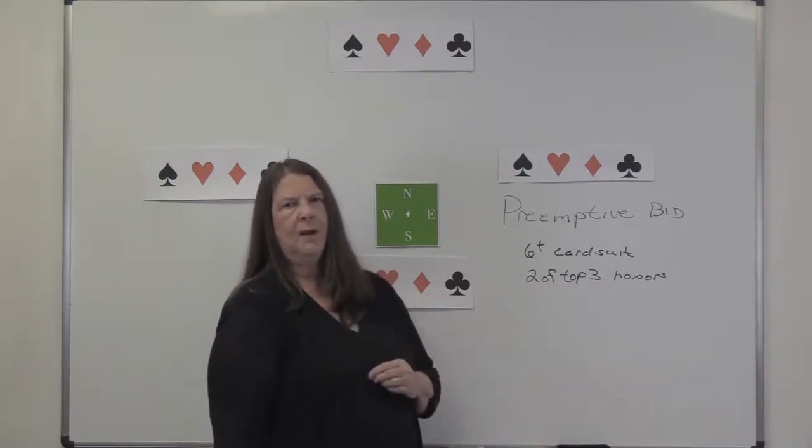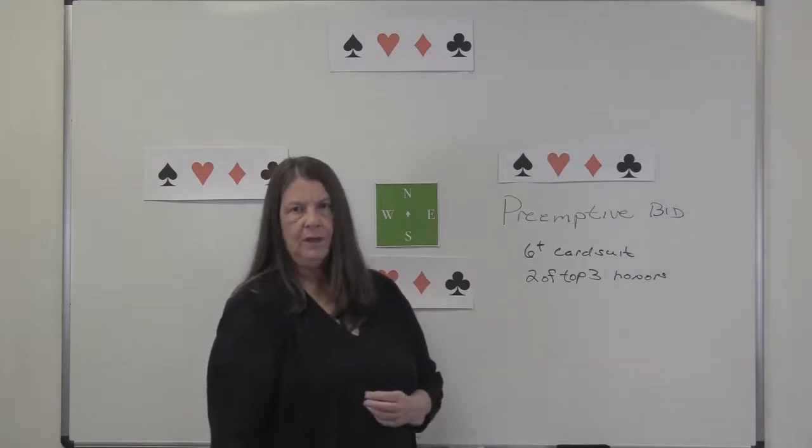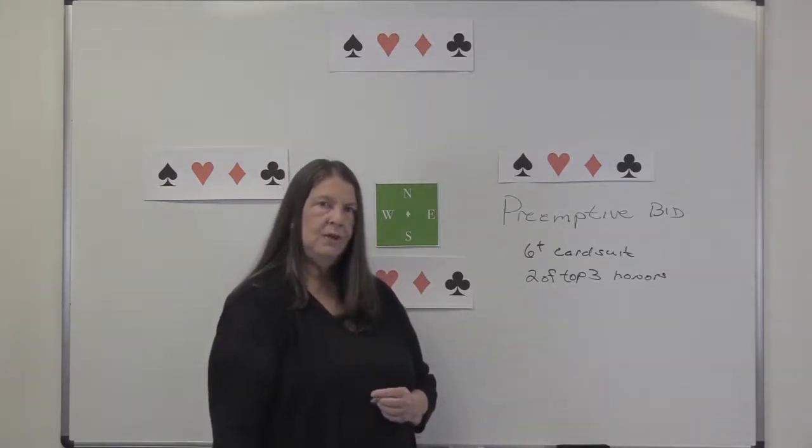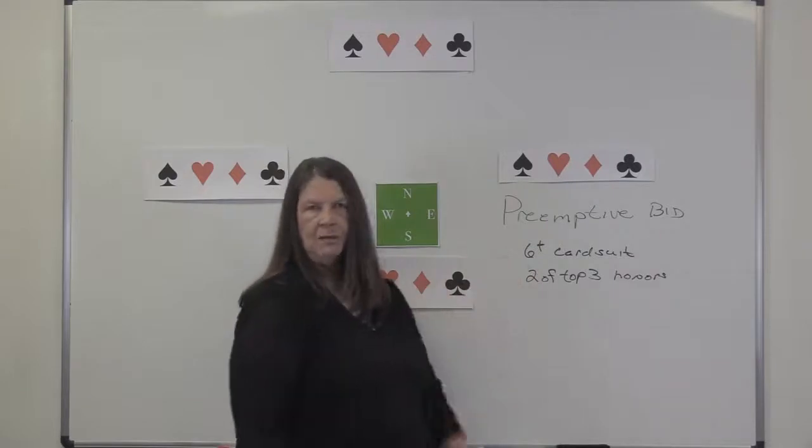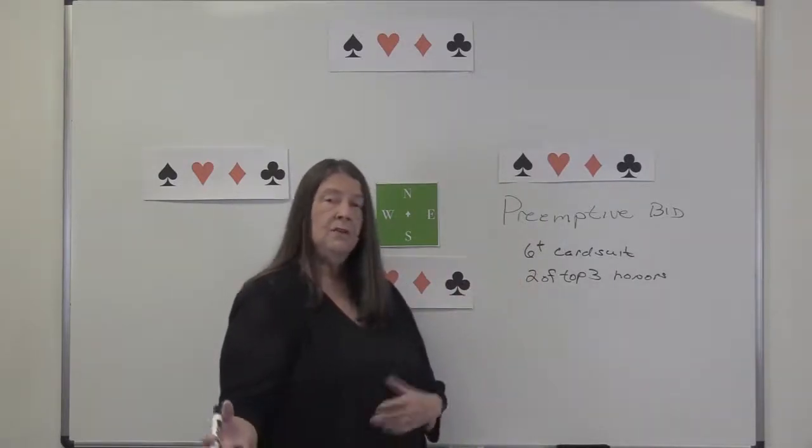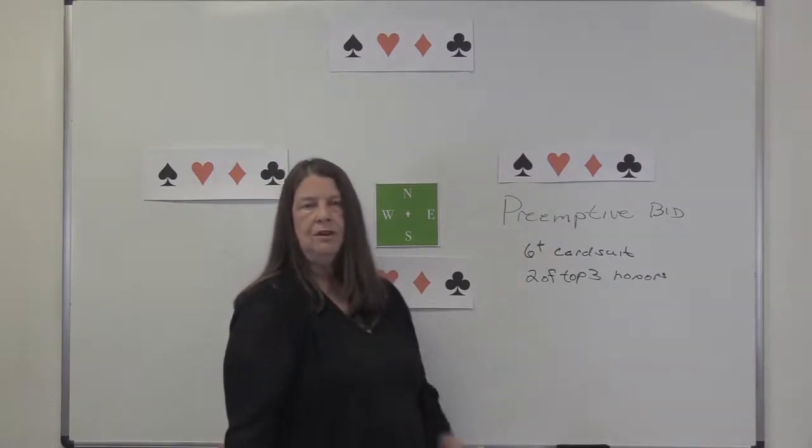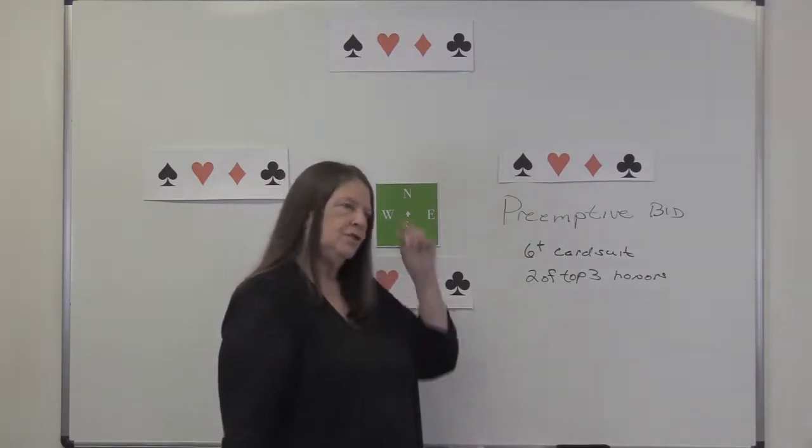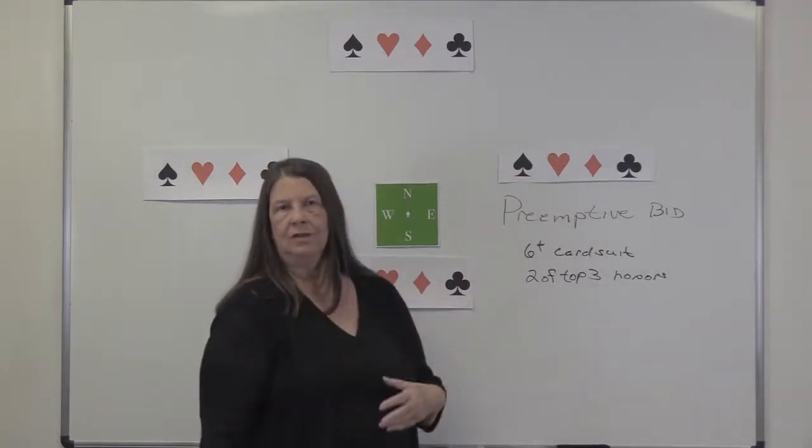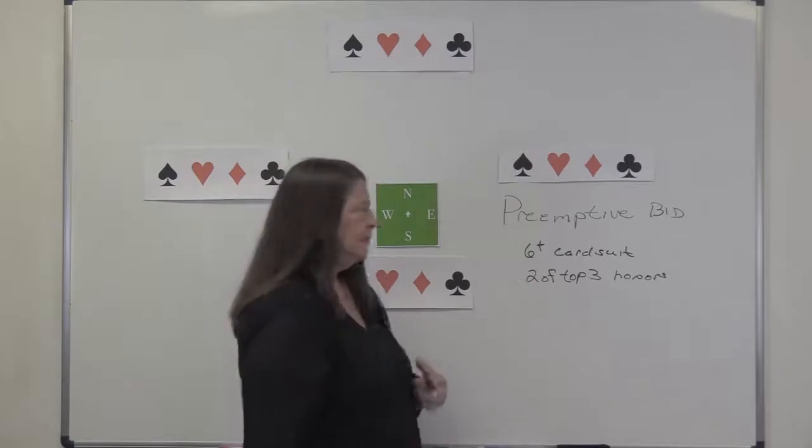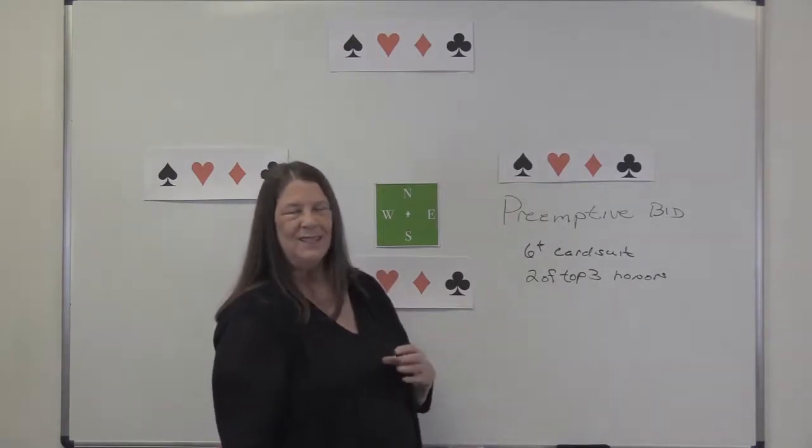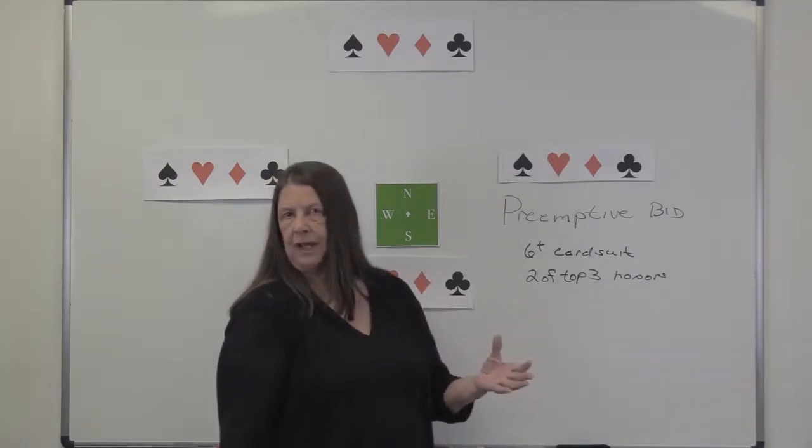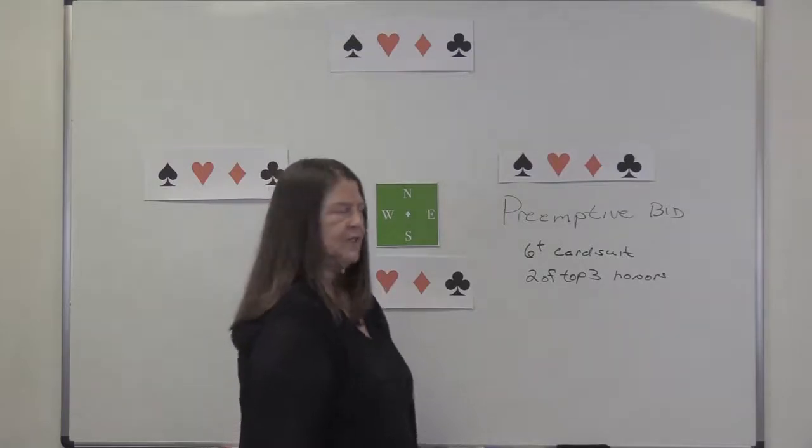As we go through this week and I talk about how the partner of the preemptor bids after a preempt is made, I think you'll understand why. I really think you need to have a structured bid. If you don't want to make it two of the top three honors, if you want to make it three of the top five honors or something like that, that's okay with me. But you and partner need to have a really firm agreement about the strength of the preempt and what your hand is going to look like when you preempt. It does make a little bit of difference whether you've passed originally, and it makes a little bit of difference whether your partner has passed, and it makes a little bit of difference who's vulnerable. So there's things that come into play.